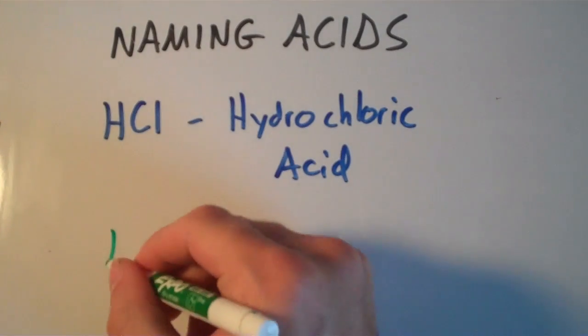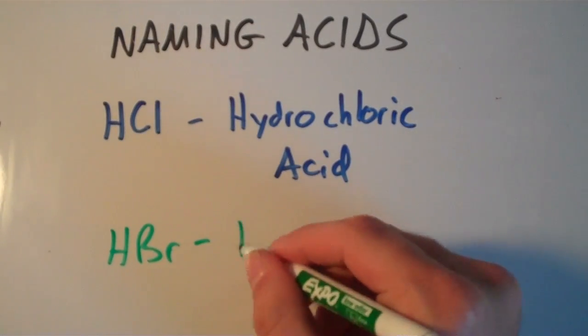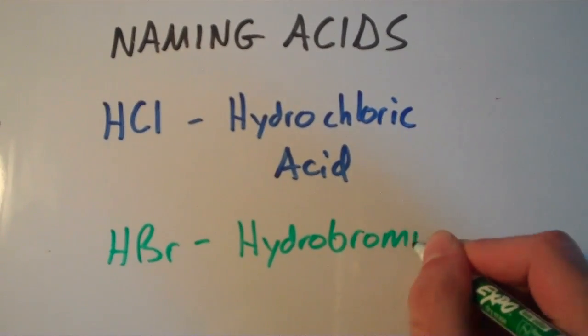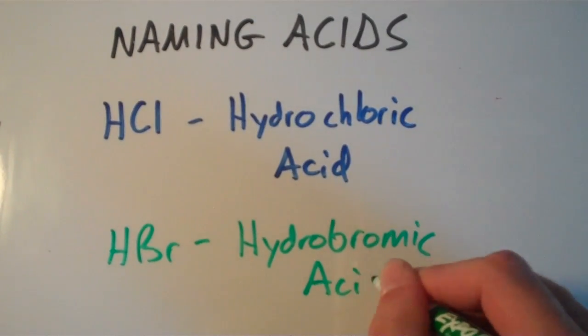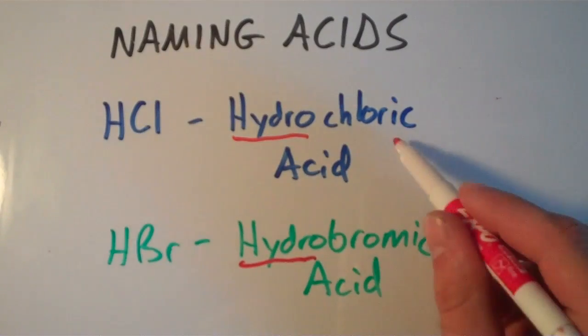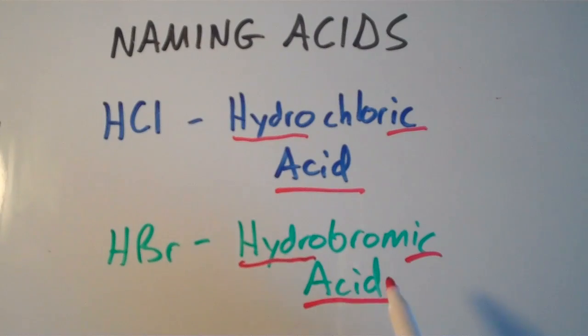If I had HBr, we would name that hydrobromic. Notice that in each case we have the prefix hydro, the suffix -ic, and we tack on the word acid. Pretty straightforward for binary acids.